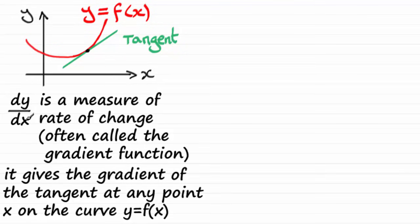It's a formula, a method that I'll show you in a moment. It gives us a measure of the rate of change, often called the gradient function. It gives the gradient of the tangent at any point x on the curve y equals some function of x.